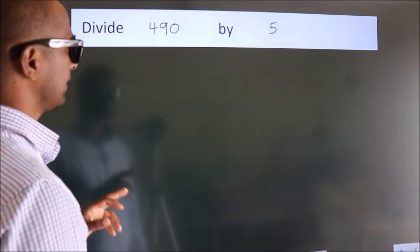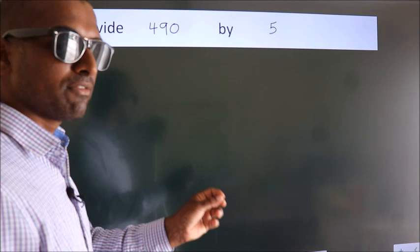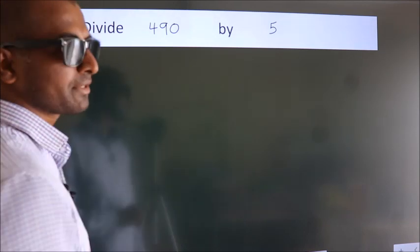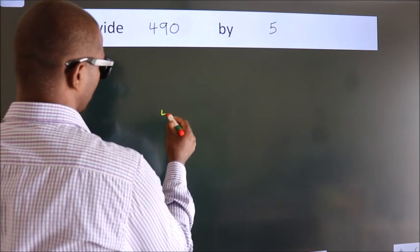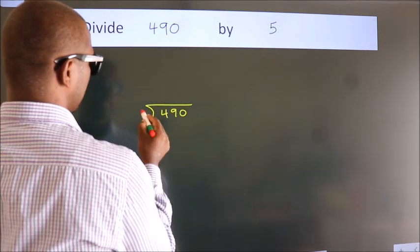Divide 490 by 5. To do this division, we should frame it in this way. 490 here, 5 here.